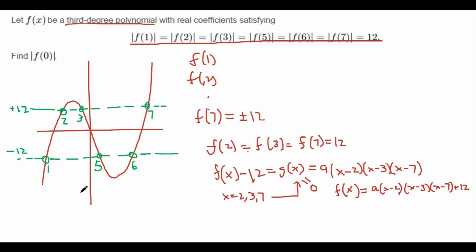And now we can do the exact same thing for the bottom line. And if we do it on the negative 12 line, I'll just save you the calculation here. We'll get that f(x) = a(x - 1)(x - 5)(x - 6) - 12.